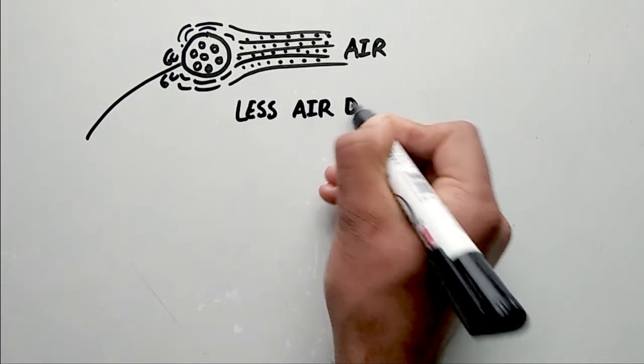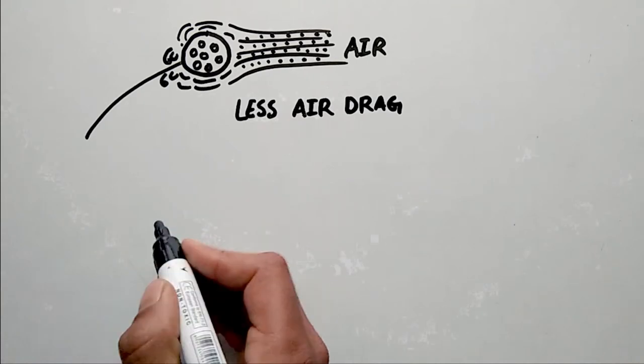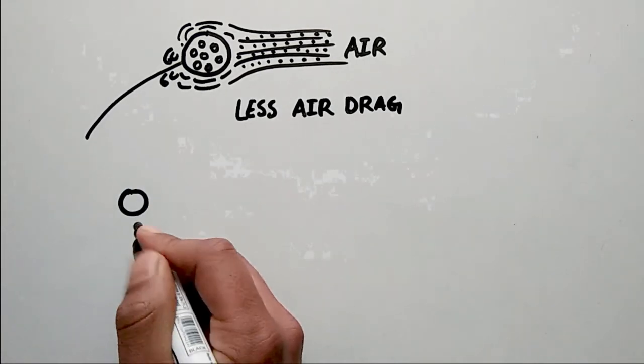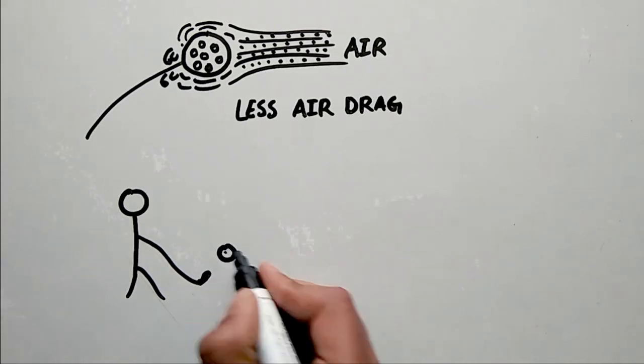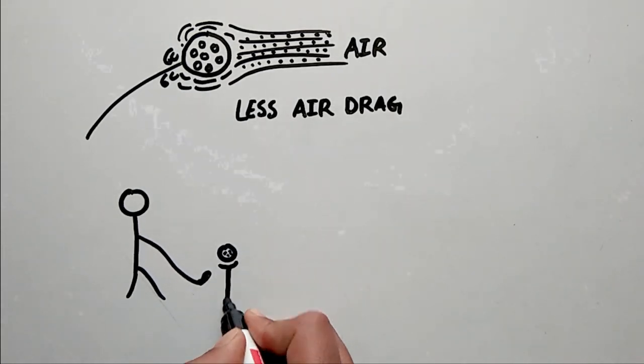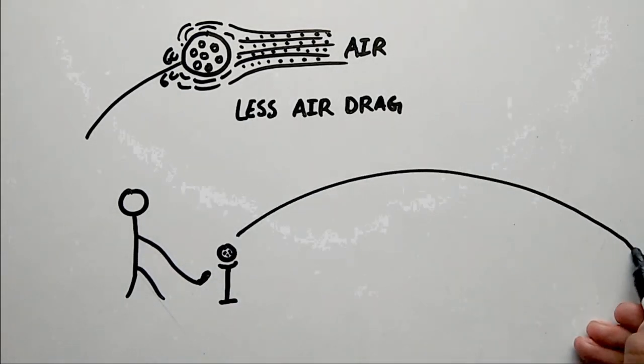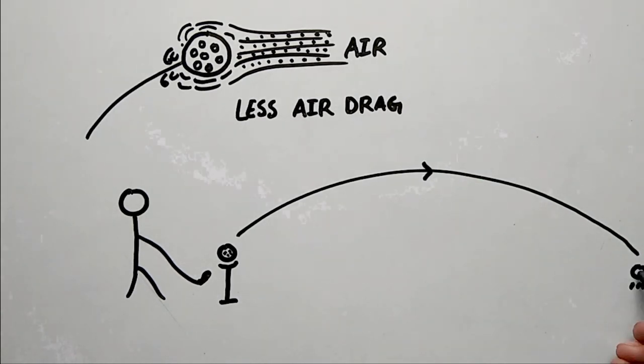So a dimpled ball has a smaller region of vortex formation at the rear and thus less air drag than a smooth ball. Hence the reduction in air drag causes the dimpled ball to fly farther than a non-dimpled ball.